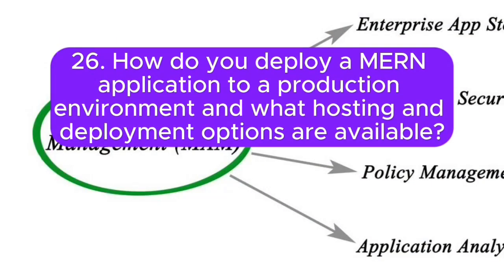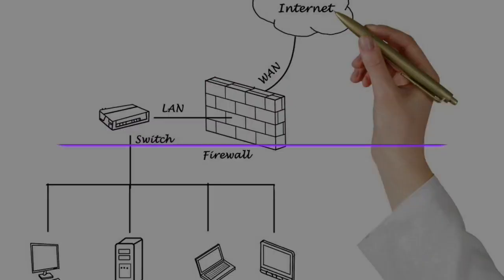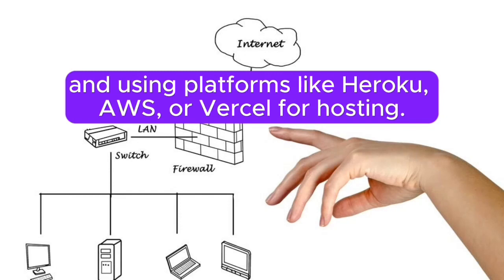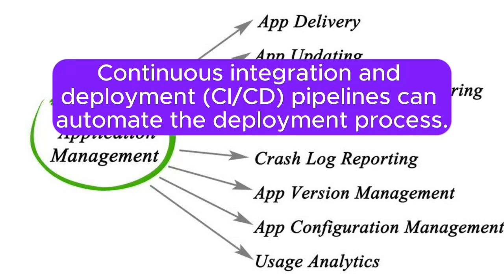26. How do you deploy a MERN application to a production environment, and what hosting and deployment options are available? Answer: Deployment typically involves building the application for production, configuring a web server like Nginx or Apache, and using platforms like Heroku, AWS, or Vercel for hosting. CI/CD pipelines can automate the deployment process.